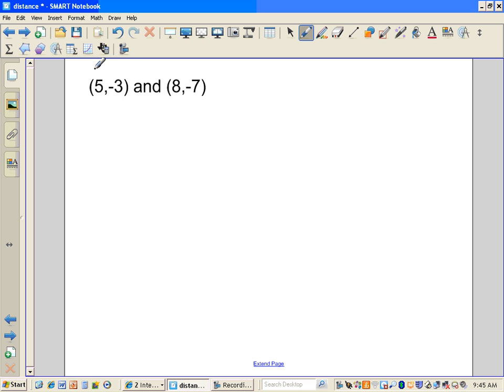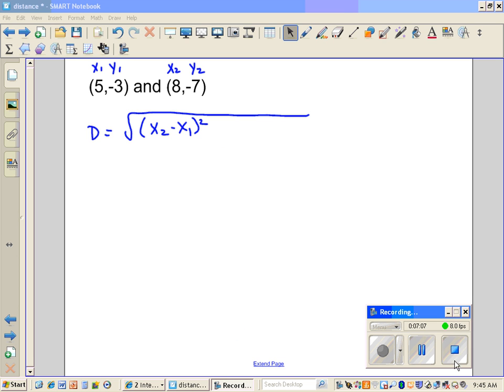Let's look at another example. 5 negative 3. There's my X1, Y1. And 8 negative 7. X2, Y2. Let's write down the distance formula. Square root. X2 minus X1. Excuse me just a minute. Someone's at my door. I think we started again. Sorry about that. Okay. So we wrote down X2 minus X1 plus Y2 minus Y1 squared.